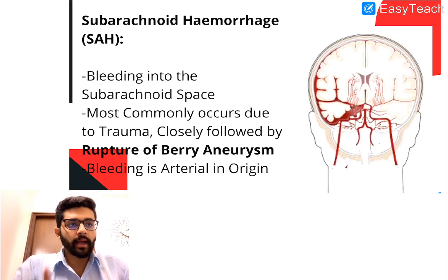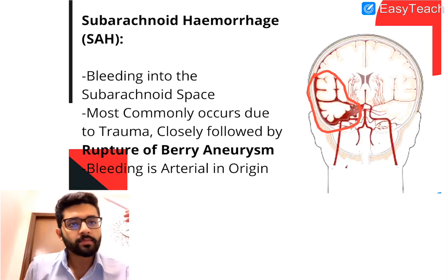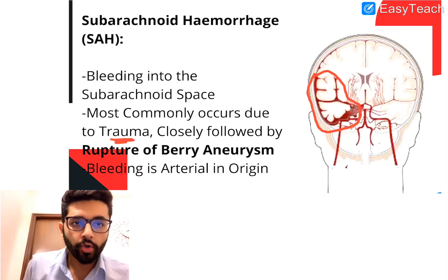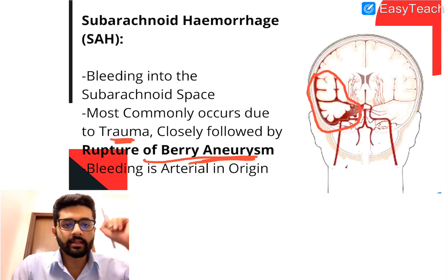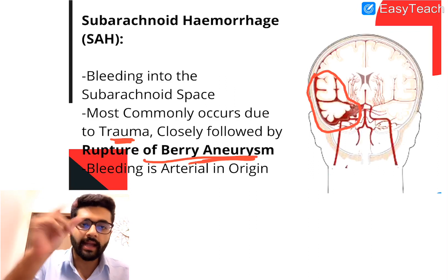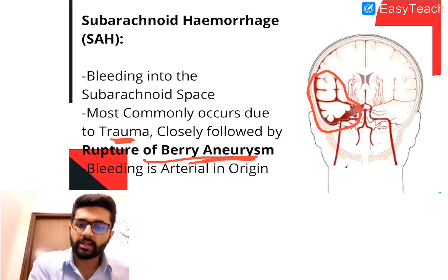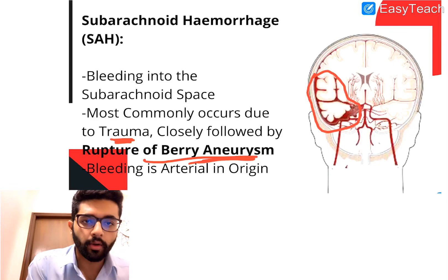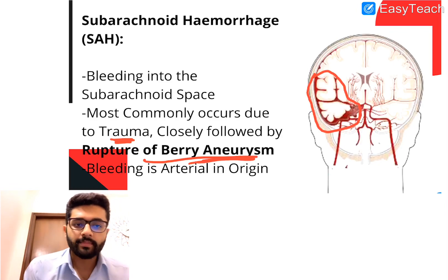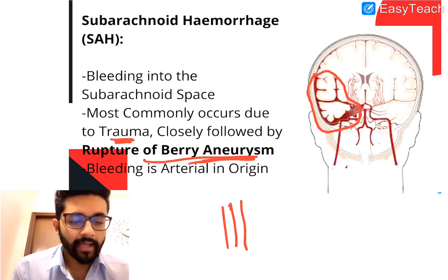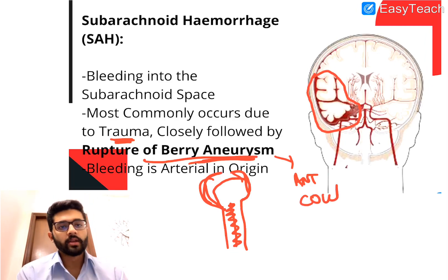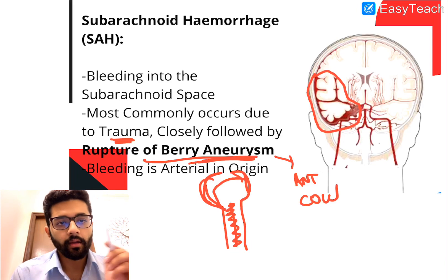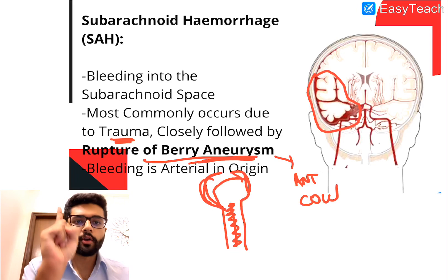Now we'll talk about subarachnoid hemorrhage — bleeding into the subarachnoid space between the arachnoid and the pia. It most commonly occurs due to trauma, but is also closely associated with rupture of a berry aneurysm — a saccular dilatation usually seen in the anterior part of the circle of Willis. It is a congenital deformity associated with adult polycystic kidney disease, Marfan syndrome, and Ehlers-Danlos syndrome type 4, caused by a congenital absence of the tunica media at branching points.